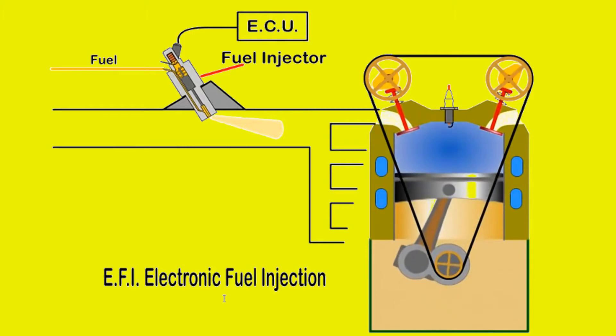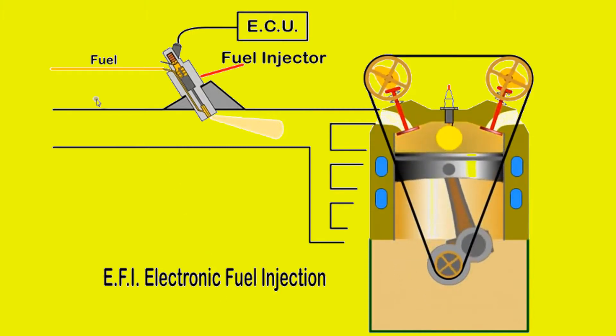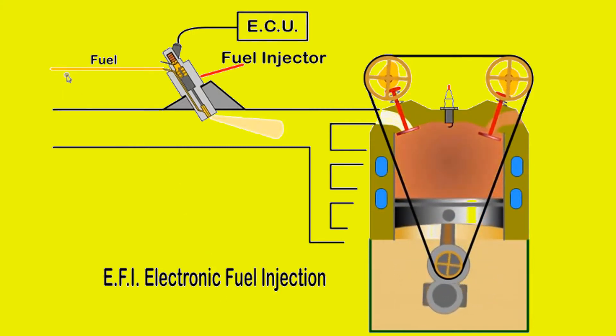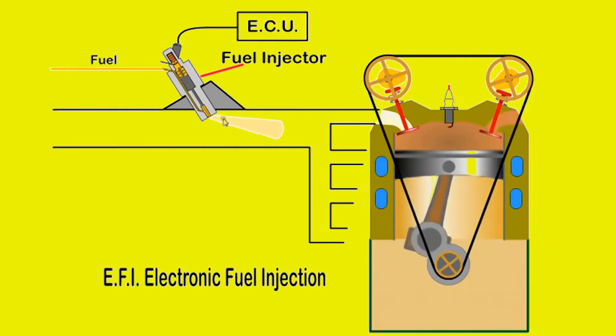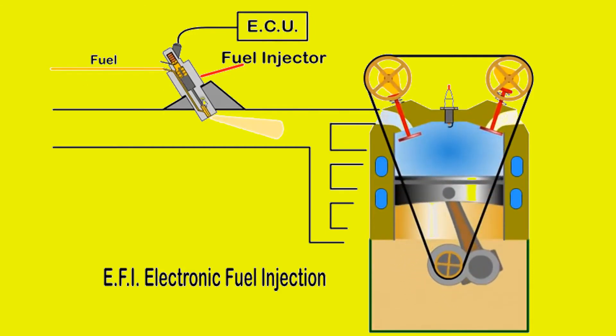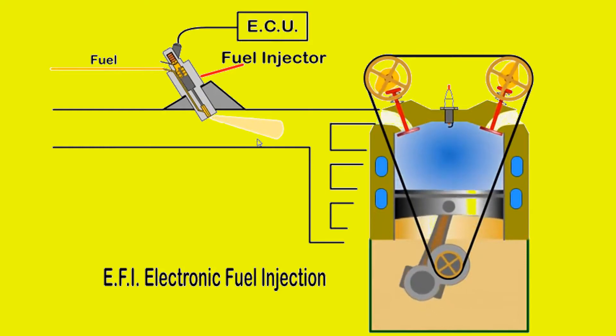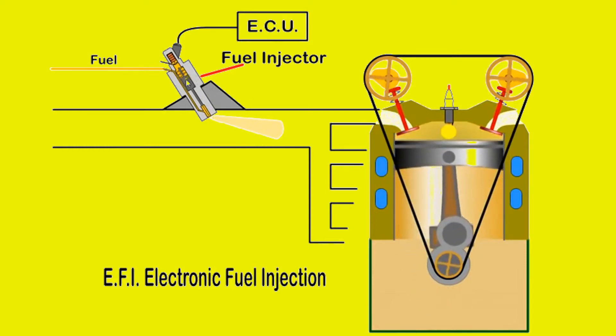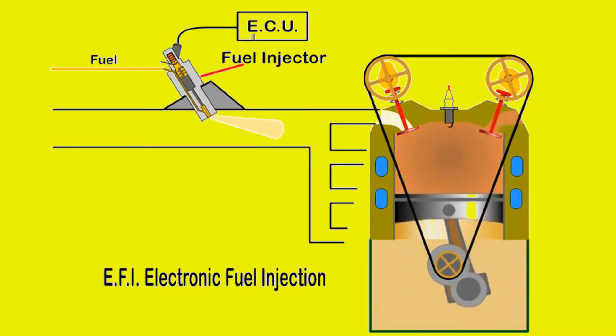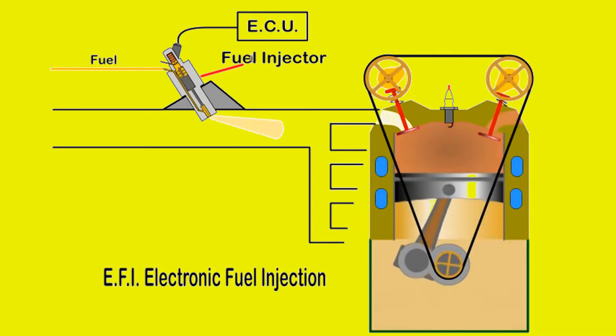With electronic fuel injection, EFI, a pump is used to pressurize the fuel which is atomized by the injector as it enters the inlet manifold. An electrical solenoid is energized by the ECU which determines the quantity of fuel required.